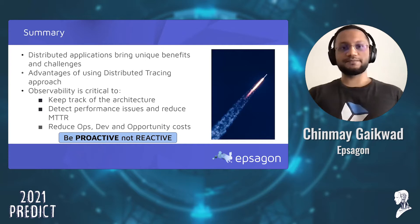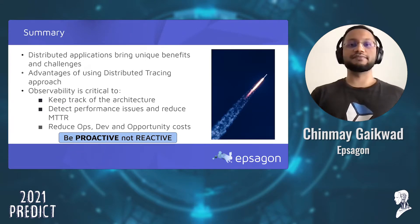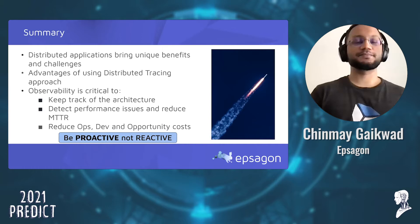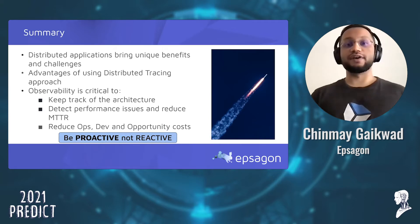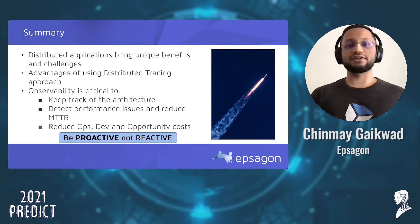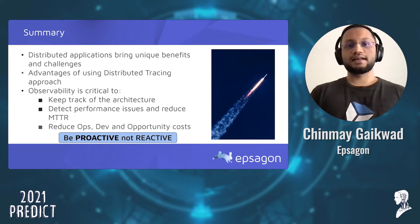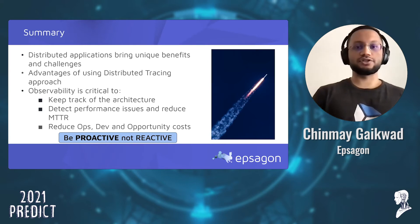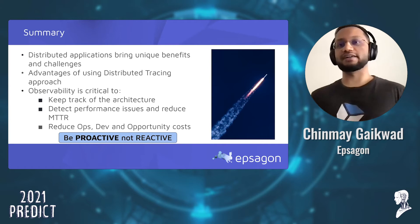To summarize everything we've covered: distributed microservices architectures come with unique benefits and challenges. Observability through metrics like throughput or response time alone aren't enough to determine where an issue is. Distributed tracing with context helps tell a story of where, when, and why a user encountered an error. Observability helps us get visibility into our architecture, reduce mean time to resolution, and reduce costs. A great observability solution helps shift our mindset from being reactive to being proactive.